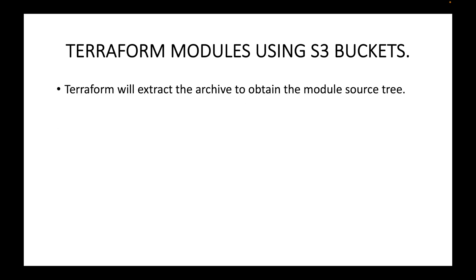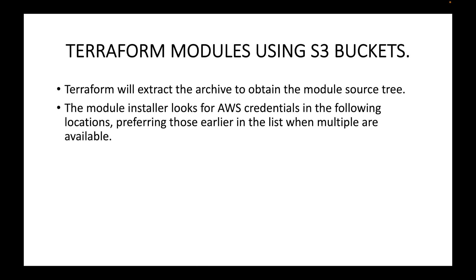Terraform will extract the archive to obtain the module source tree. Once you create the archive, store it in the S3 bucket, and give the source pointing to S3, Terraform will download the zip file and automatically extract the configuration files for you.